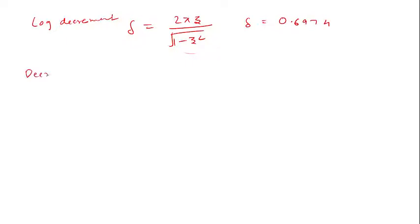Now the decrement ratio is given as x₀/x₁ = x₁/x₂ = x₂/x₃ and so on, which will be equal to e^δ. Now you can write x₀/x₁ = e^0.6974.